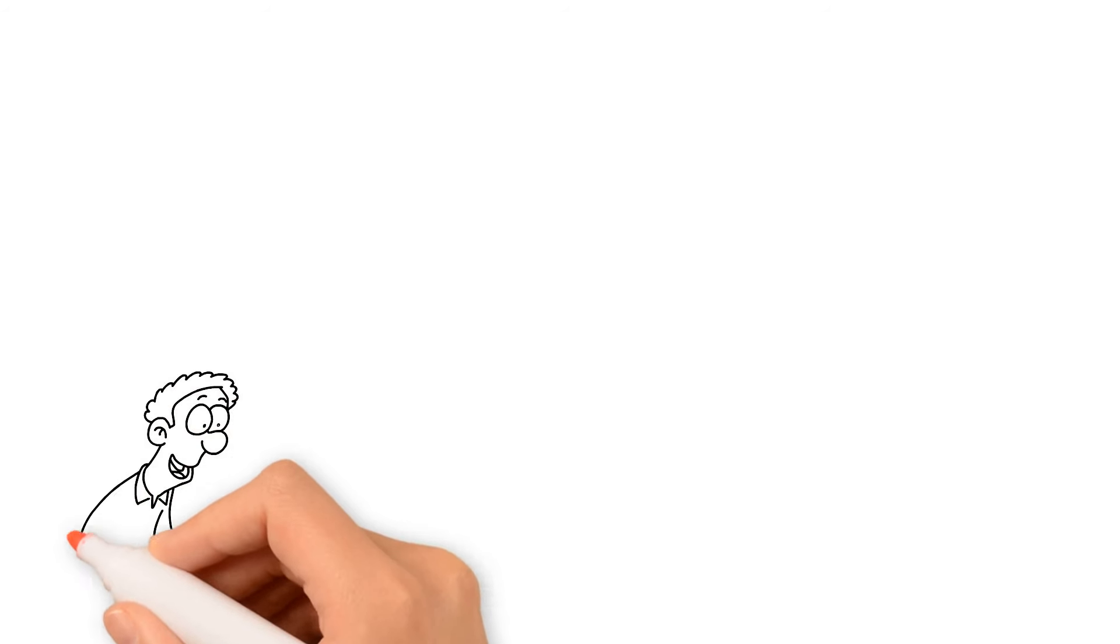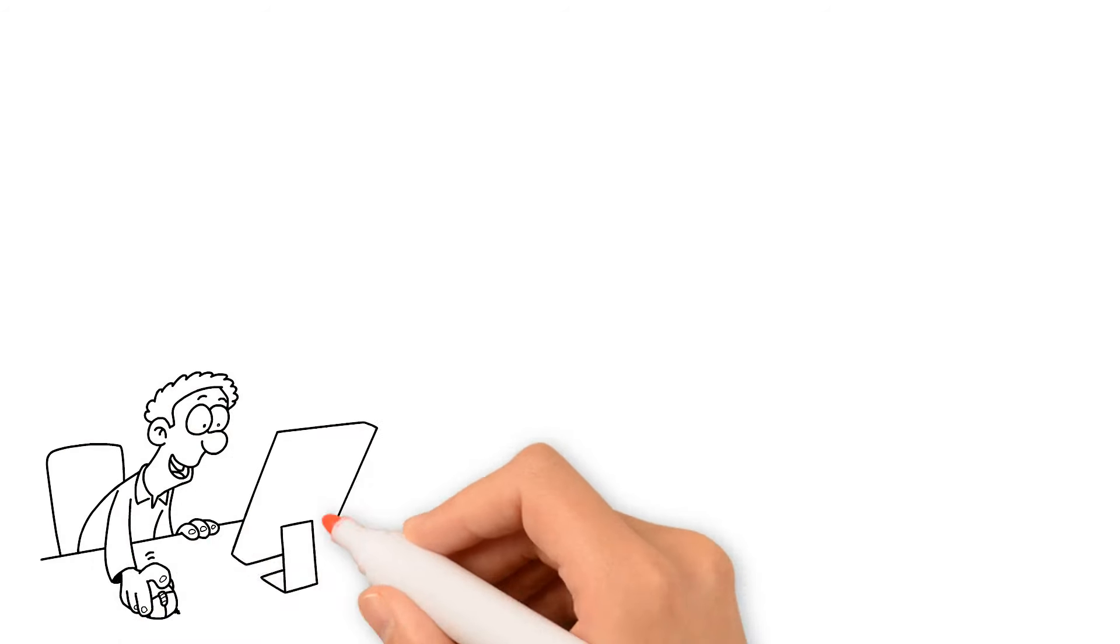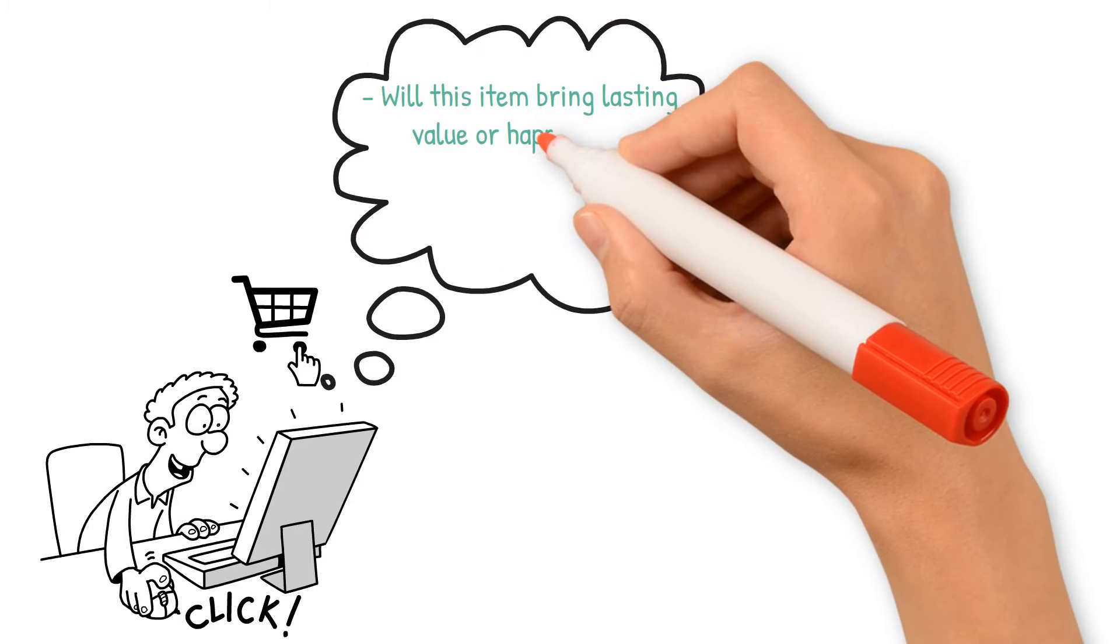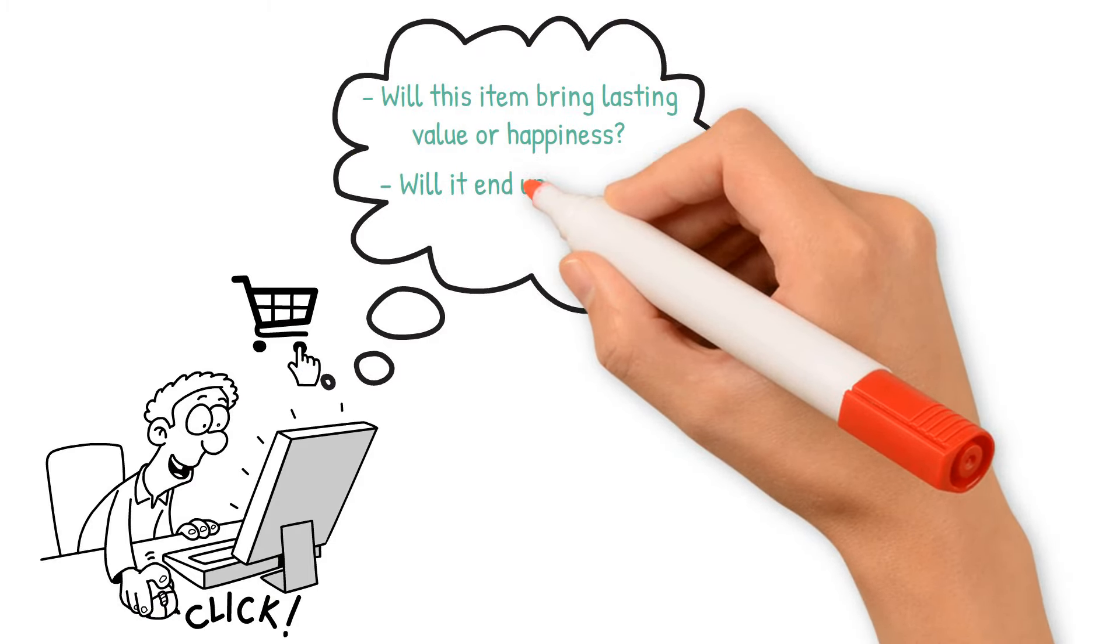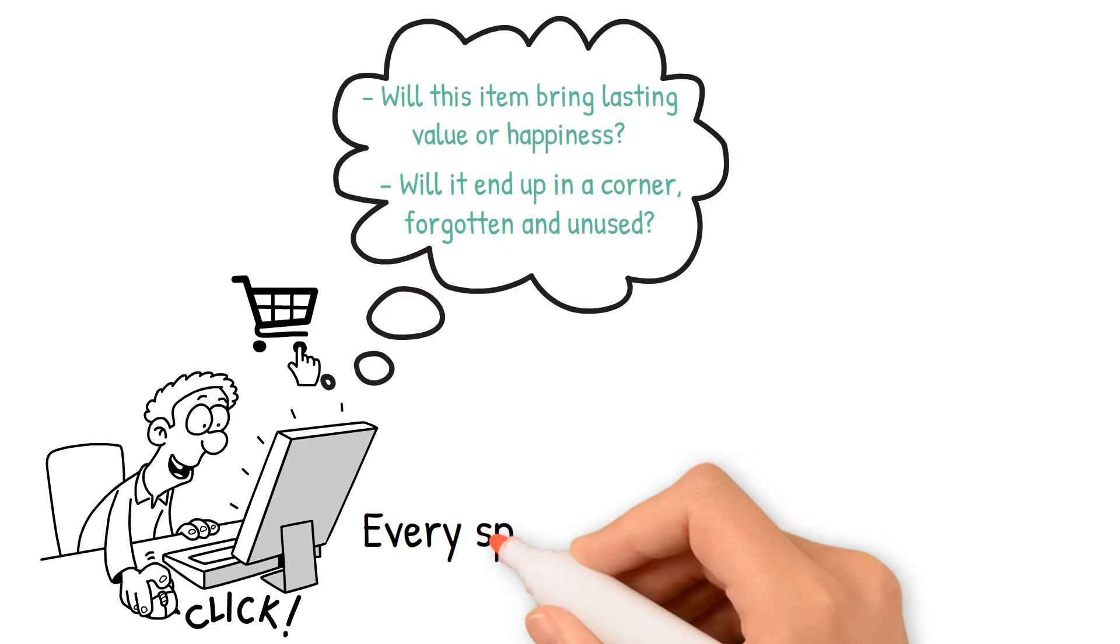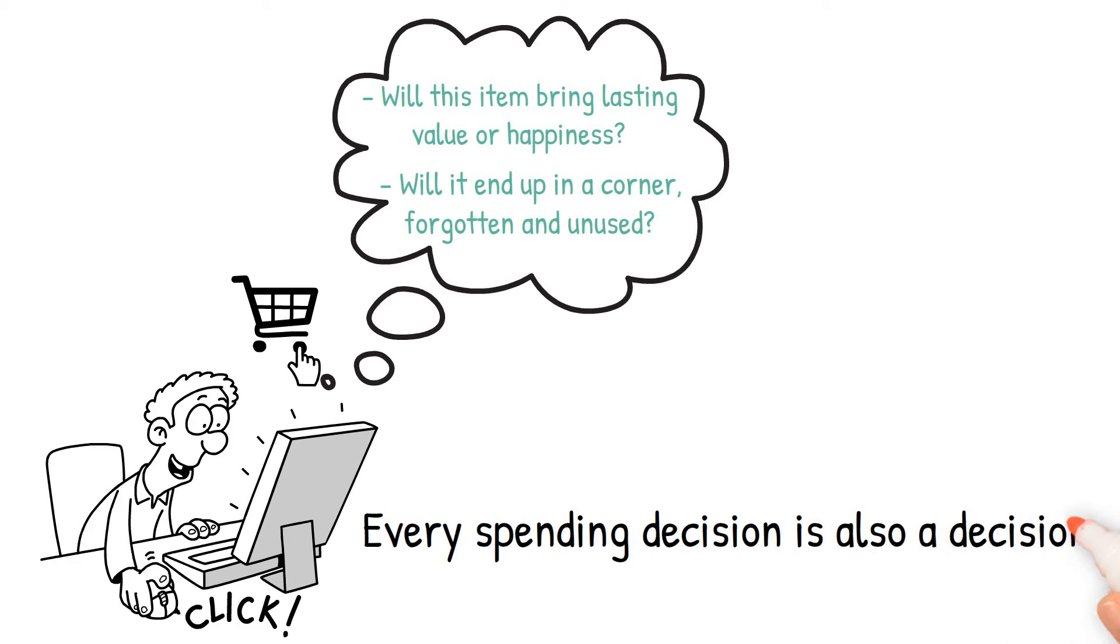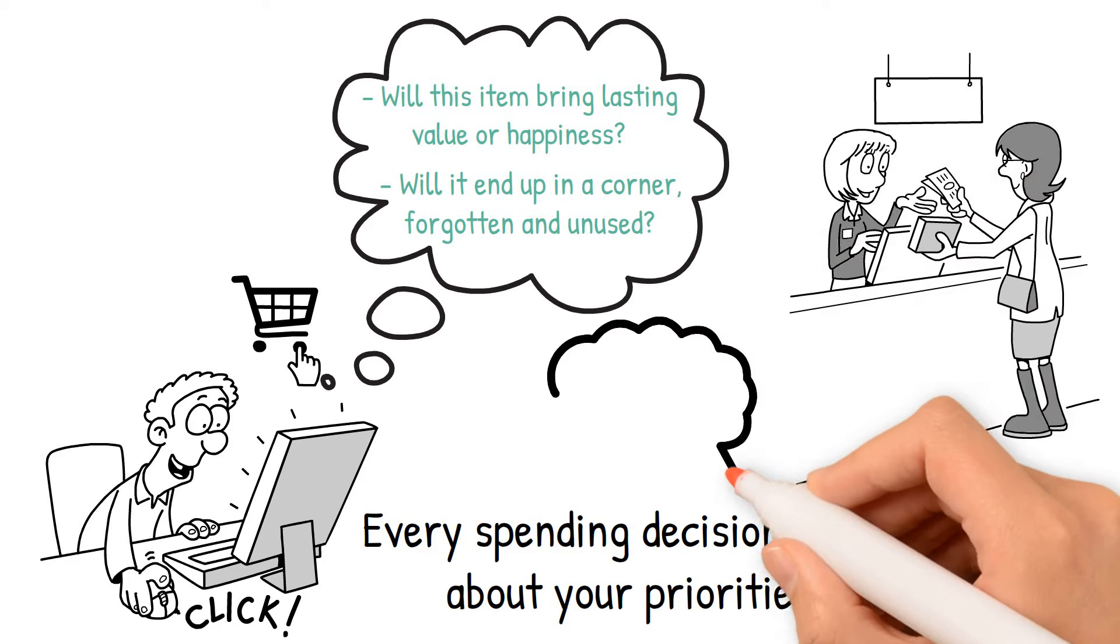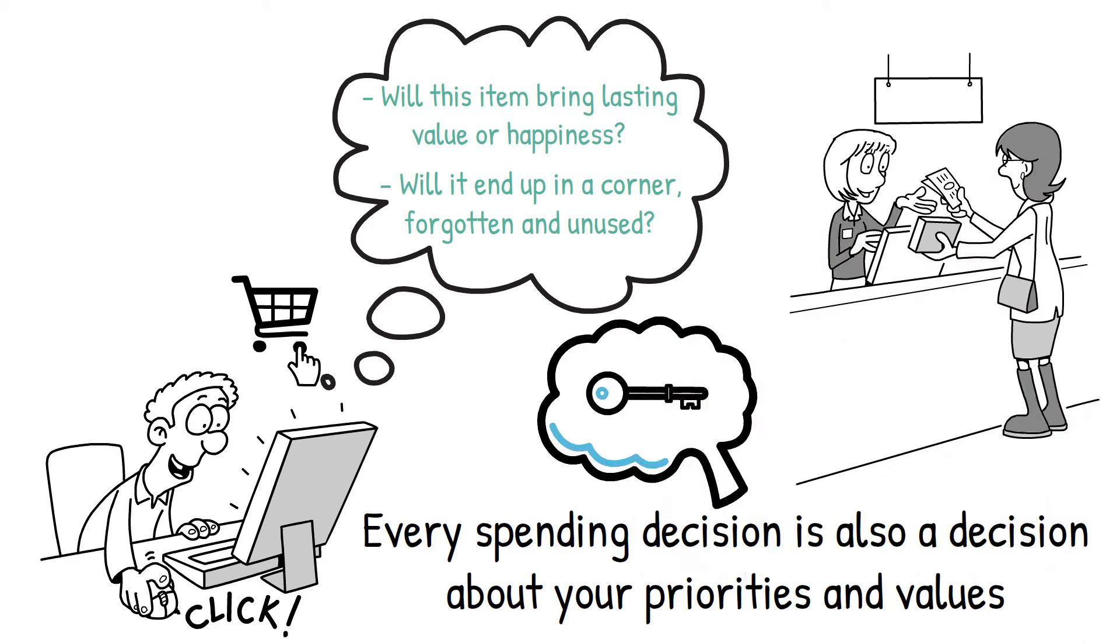Understanding the value of money also means seeing beyond the immediate pleasure of a new purchase. Will this item bring lasting value or happiness? Or will it end up in a corner, forgotten and unused? Remember, every spending decision is also a decision about your priorities and values. Spend it wisely on things that truly add value to your life. This understanding is key to living frugally and saving more.